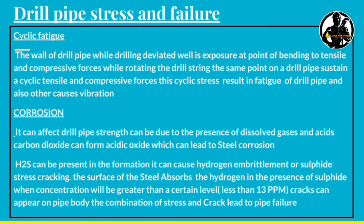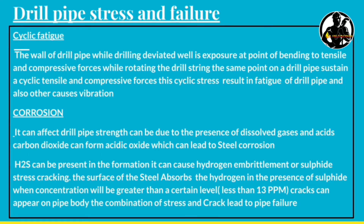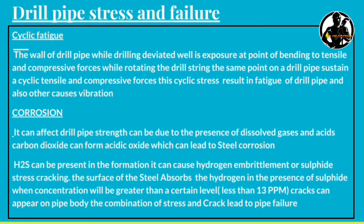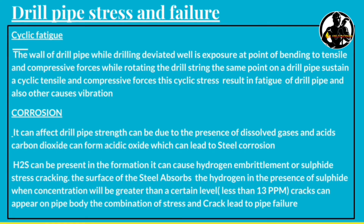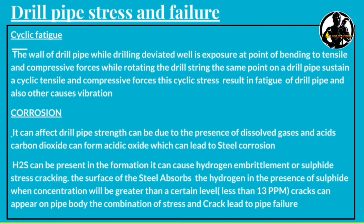Corrosion can affect the drill pipe due to the presence of dissolved gases and acids. CO2 can form acidic oxides, leading to corrosion. H2S present in the formation can cause hydrogen embrittlement or sulfate stress cracking. The surface of the steel absorbs hydrogen in the presence of sulfide, and when the concentration is greater than 13 ppm, cracks can appear on the pipe body, leading to pipe failure.